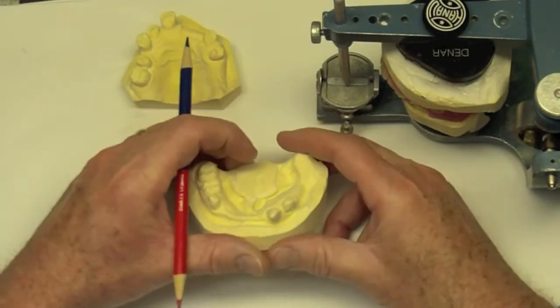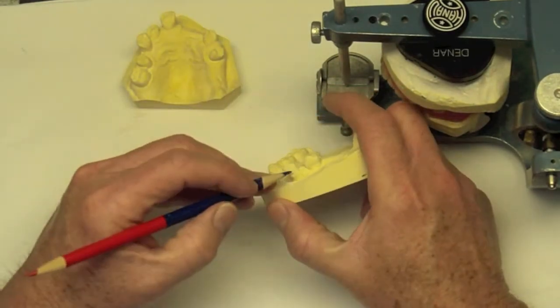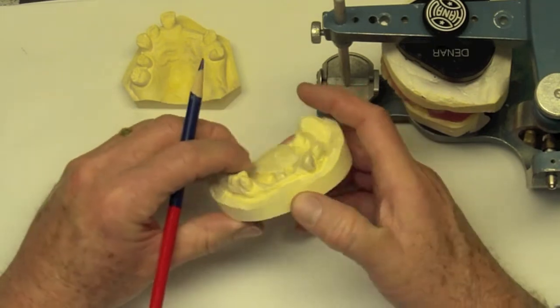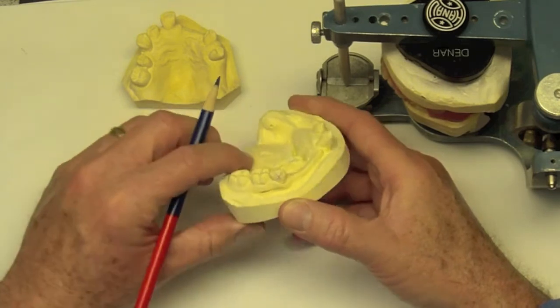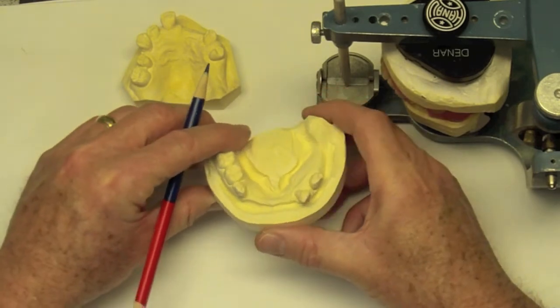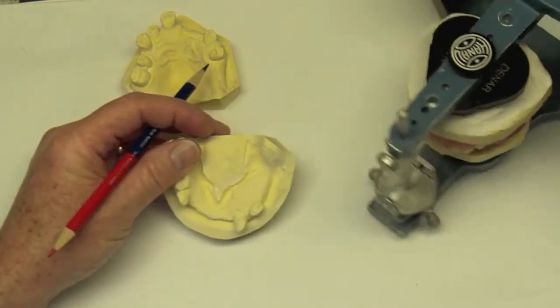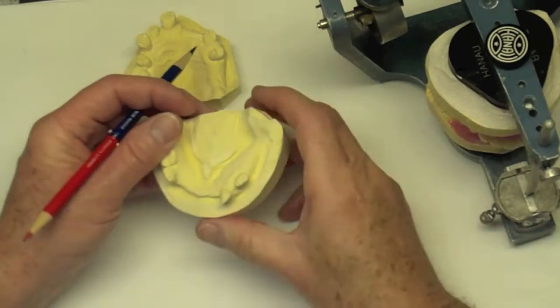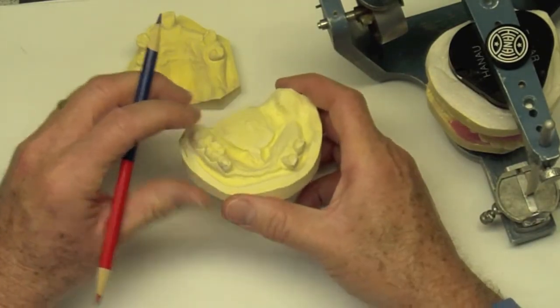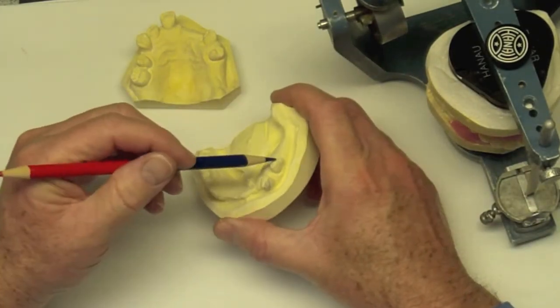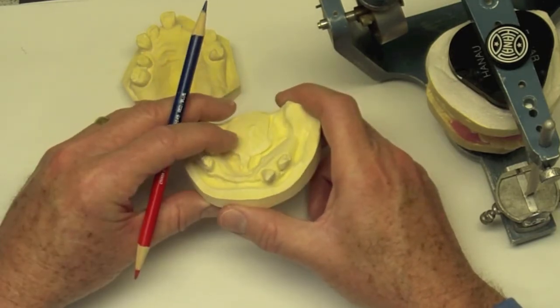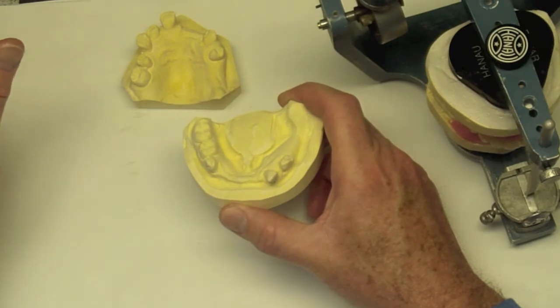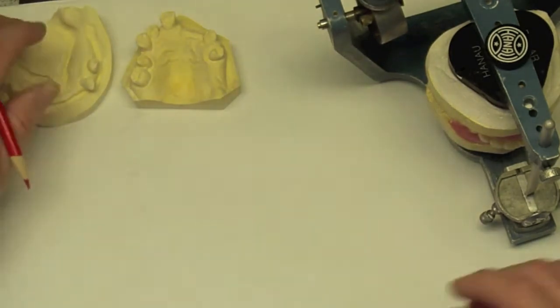Not too dissimilar situation on the lower. Again, we have proclined canine. This one's not in too bad a position, but again, we have issues with periodontal disease. So we're going to go ahead and remove those two teeth and retain these two molars and this premolar and fabricate what's going to be an immediate interim removable partial denture.